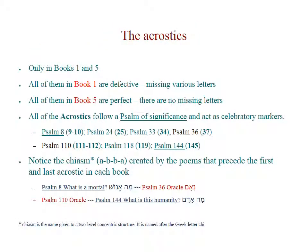Now let's look at these eight acrostics. They occur only in Books 1 and 5, four in each. All the acrostics in Book 1 are defective — these are Psalms 9 and 10 together, then Psalm 25, 34, and 37. All the acrostics in Book 5 are perfect, with no letters missing. These are Psalms 111 and 112, then 119 with 22 eight-verse poems in that psalm, and 145, the last psalm before the final praises.